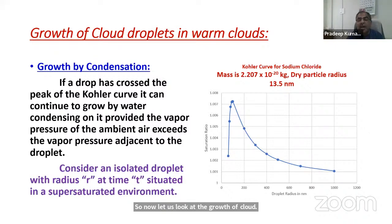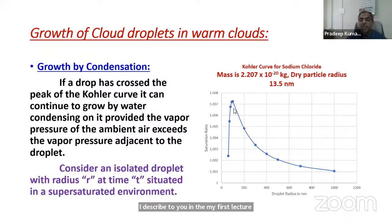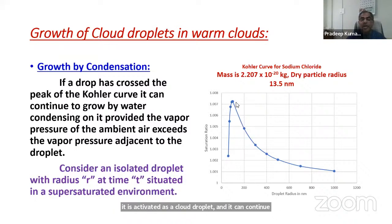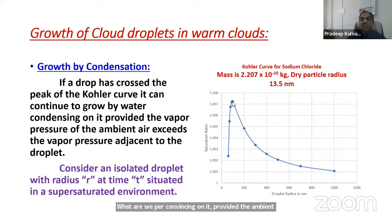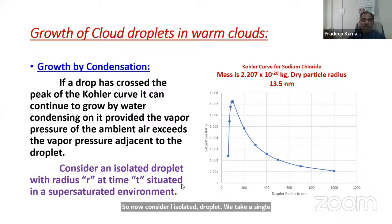Referring back to the Kohler curve from the first lecture: if the drop has crossed the peak of the Kohler curve it is activated as a cloud droplet and can continue to grow by water vapor condensation, provided the ambient supersaturation — or ambient vapor pressure — exceeds the vapor pressure exerted by the drop. Consider an isolated droplet with radius r at time t in a supersaturated environment. In steady state, the rate of increase in mass m of the droplet equals the rate of flow of water vapor across a unit area of the droplet in the presence of a water vapor density gradient.